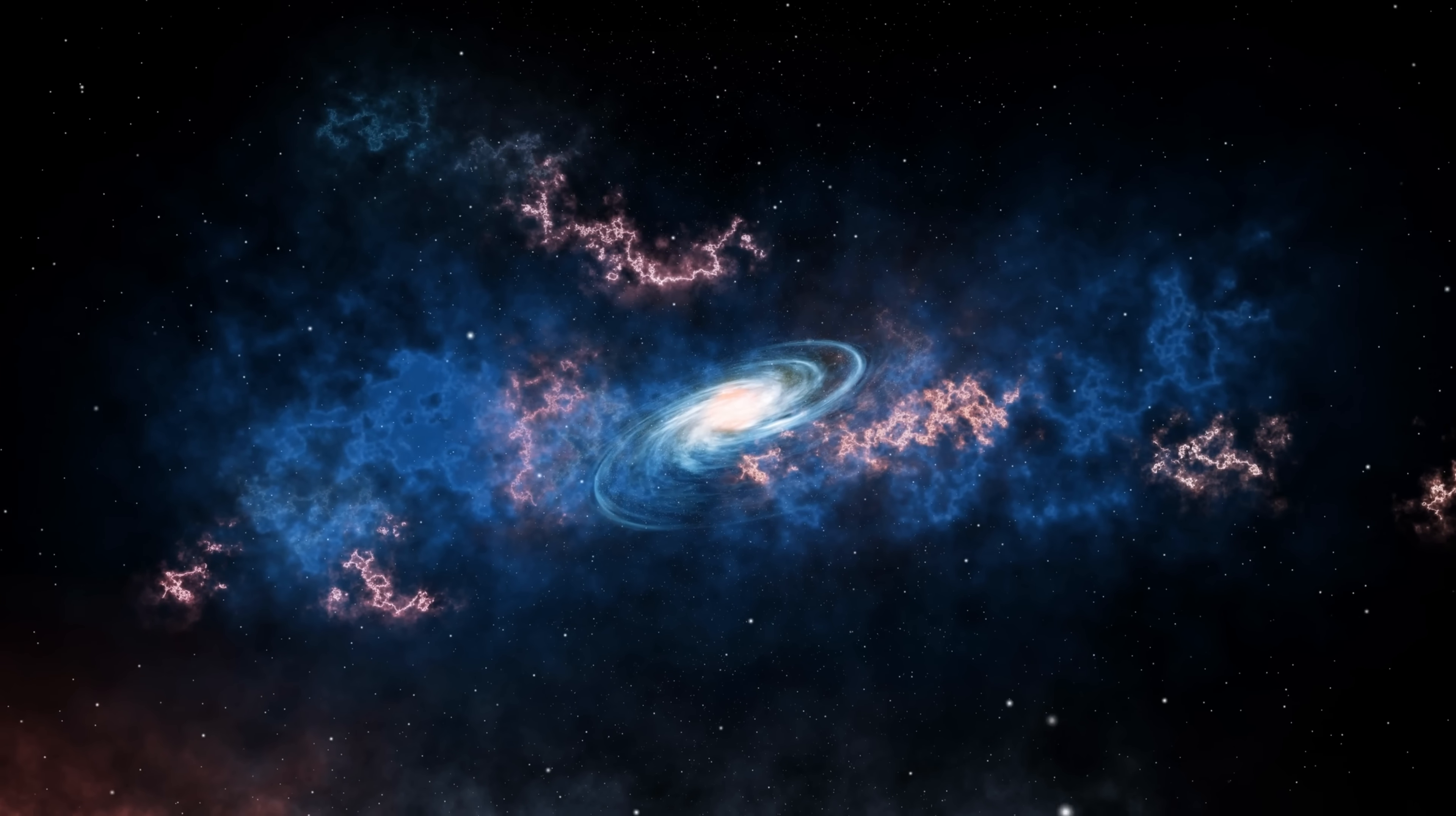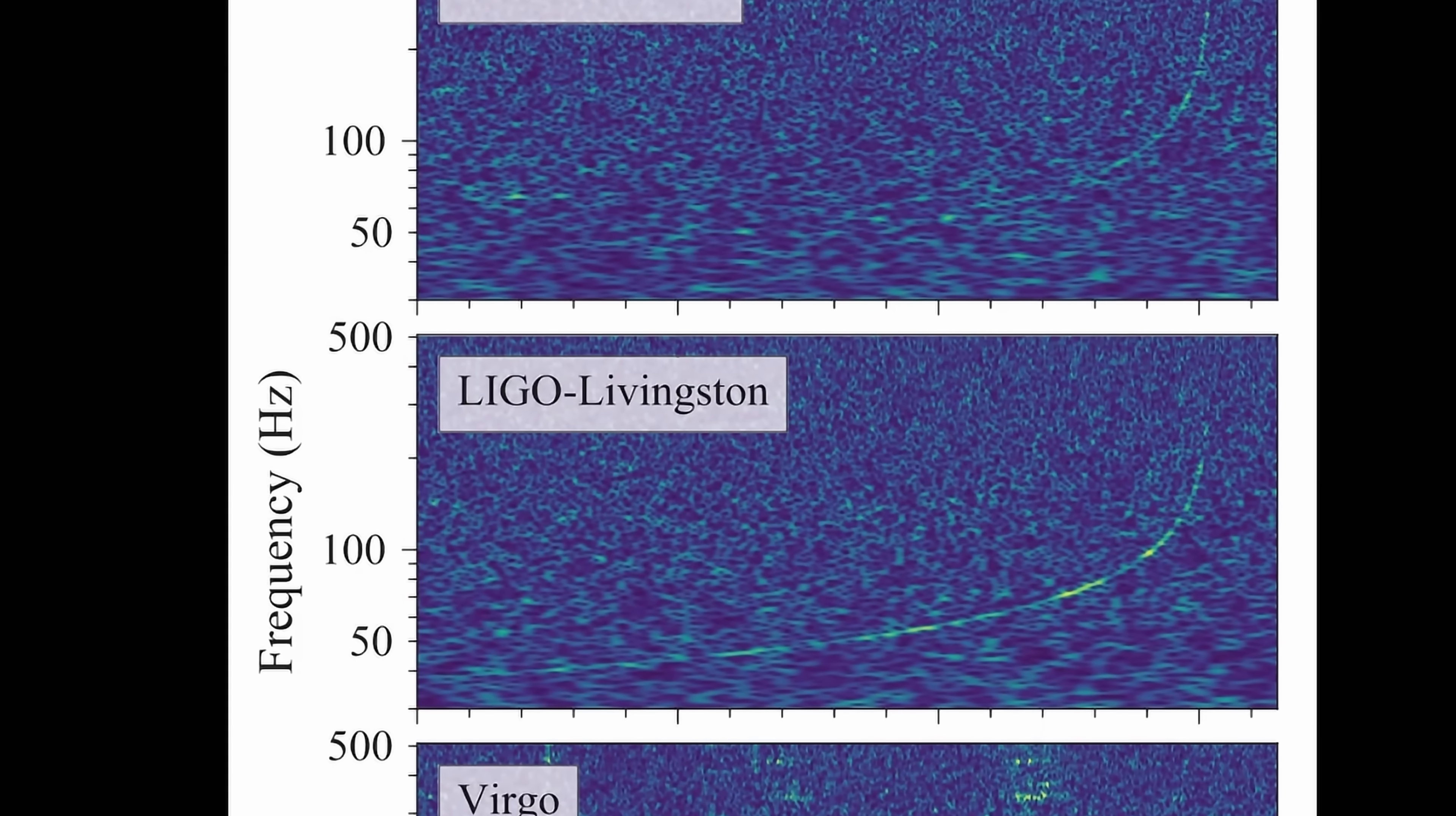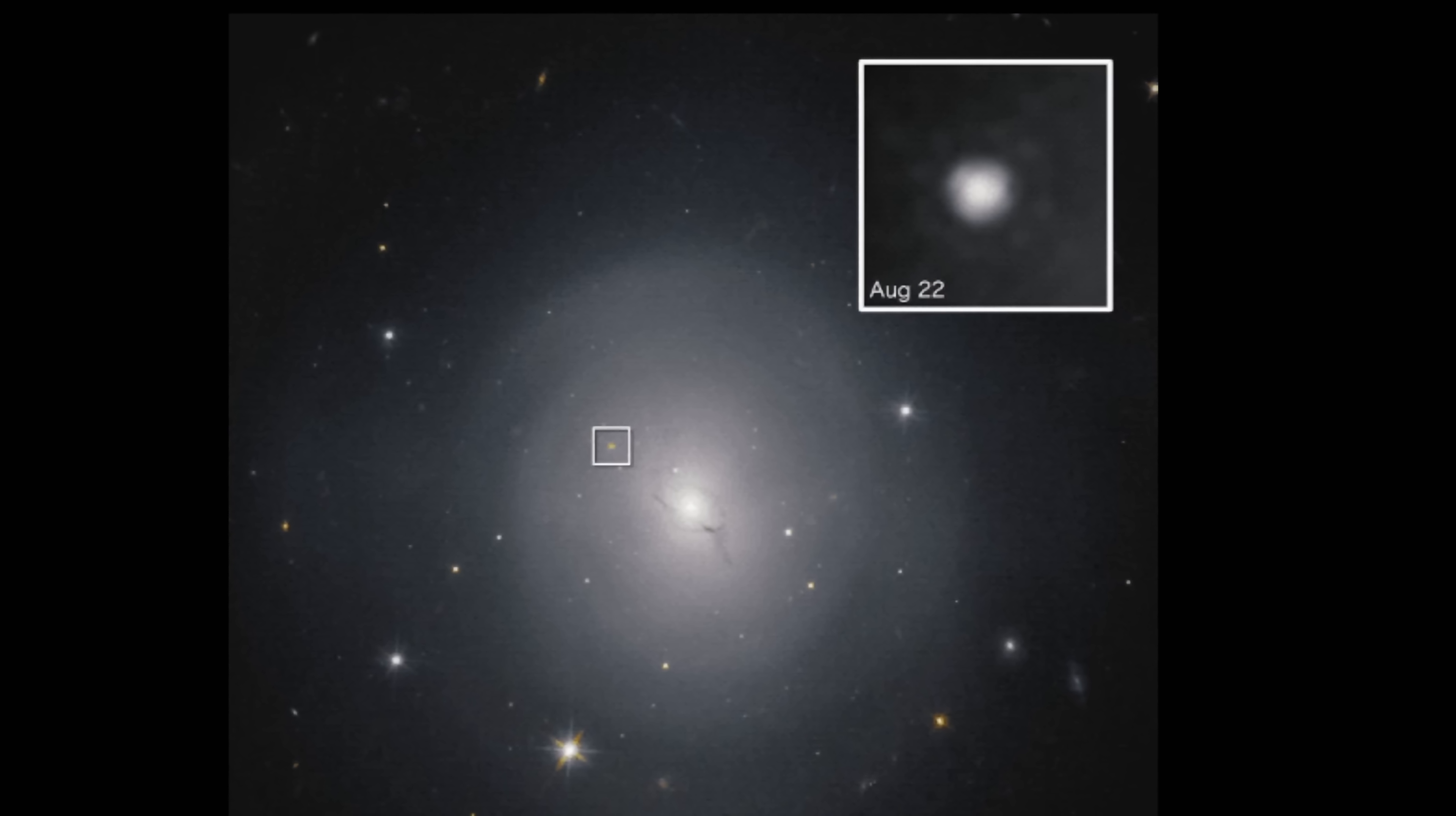But within just two years something else even more important was discovered 140 million light years away from us. This was GW170817 and it was the first time ever gravitational waves also coincided with something else. Actual electromagnetic emissions visible by different telescopes. Because in this case we actually discovered the first ever neutron star collision that produced what's known as a kilonova. And this was a tremendous event.